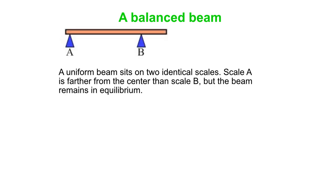So let's look at a particular example. Here we have just a beam, a piece of wood, and it sits on two identical scales. Scale A happens to be farther from the center of the beam than is scale B, but the beam remains in equilibrium. In other words it is balanced. Which scale do you think shows a higher reading? Scale A or scale B?